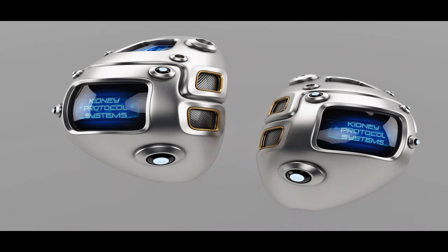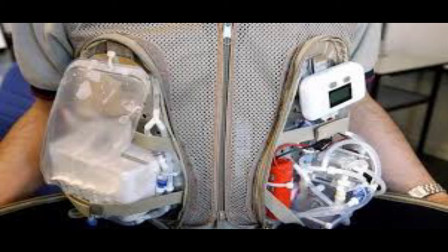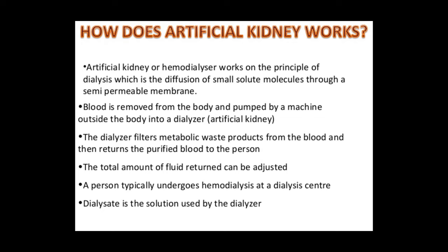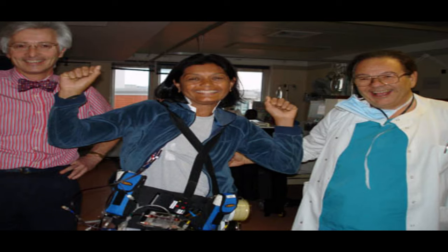The wearable artificial kidney is a miniaturized version of the bulky dialysis machine. It is designed to replace the conventional hemodialysis. It purifies blood like a normal kidney. The system is battery operated and weighs up to 5 kgs.